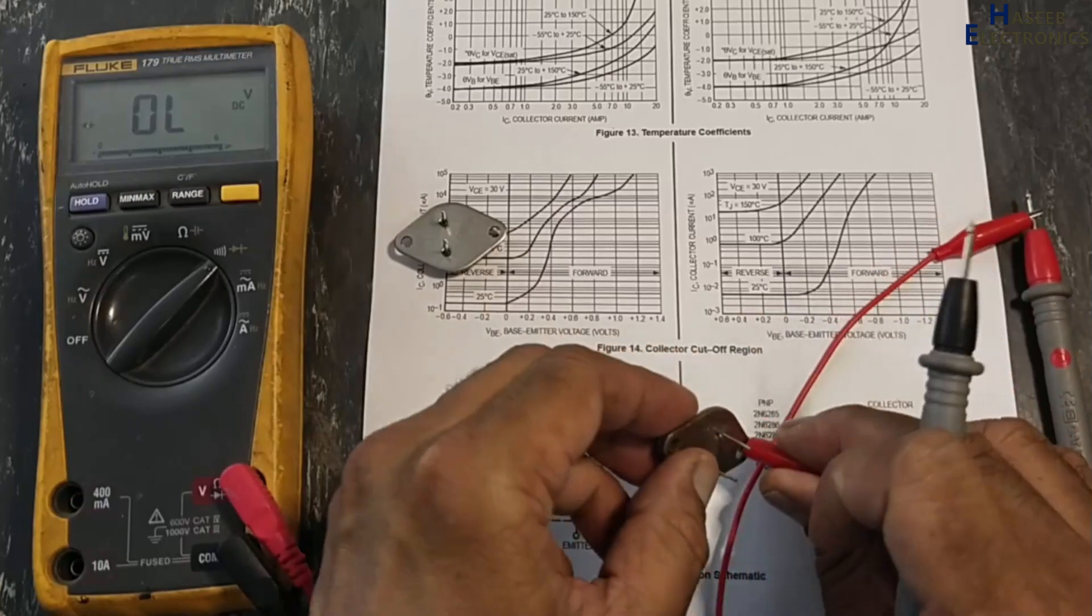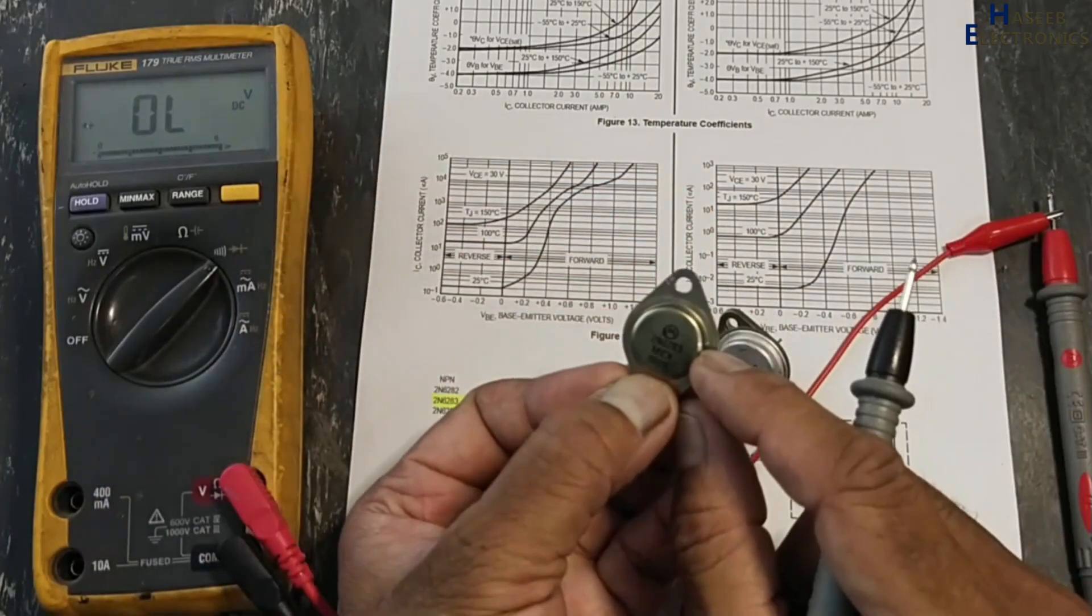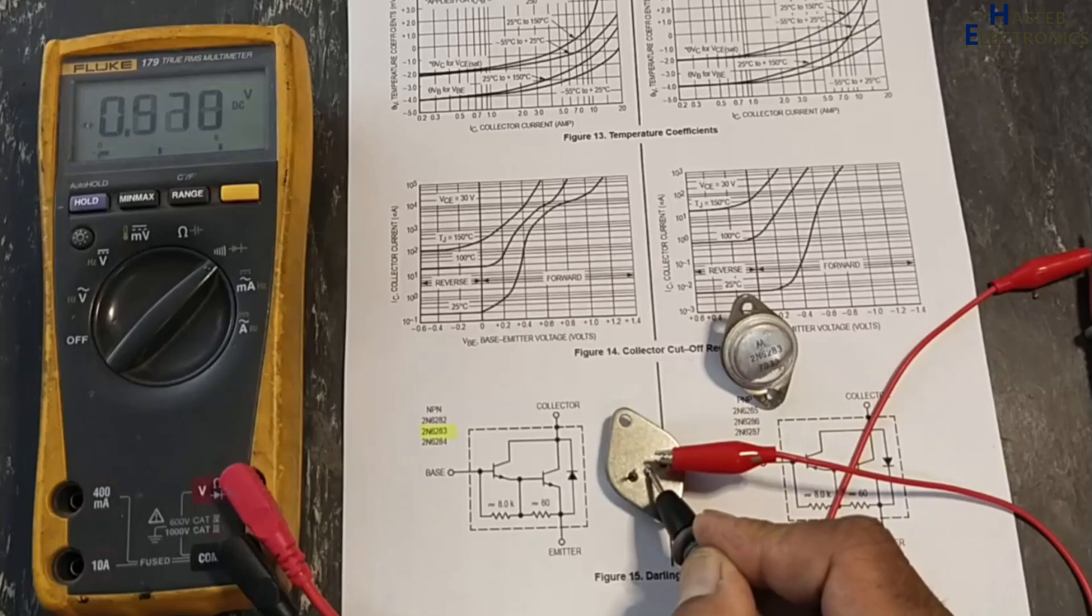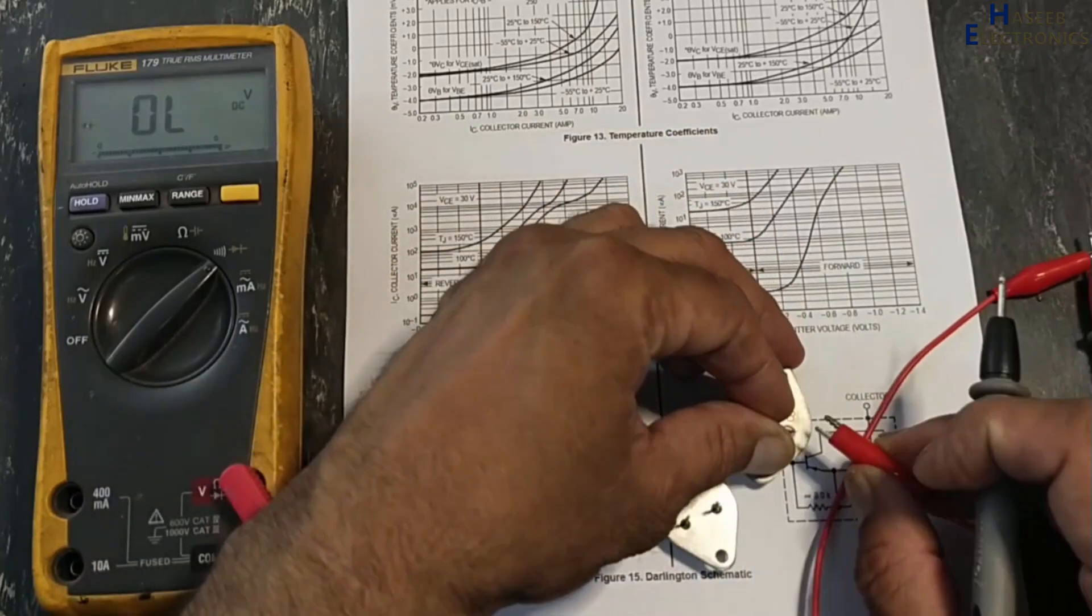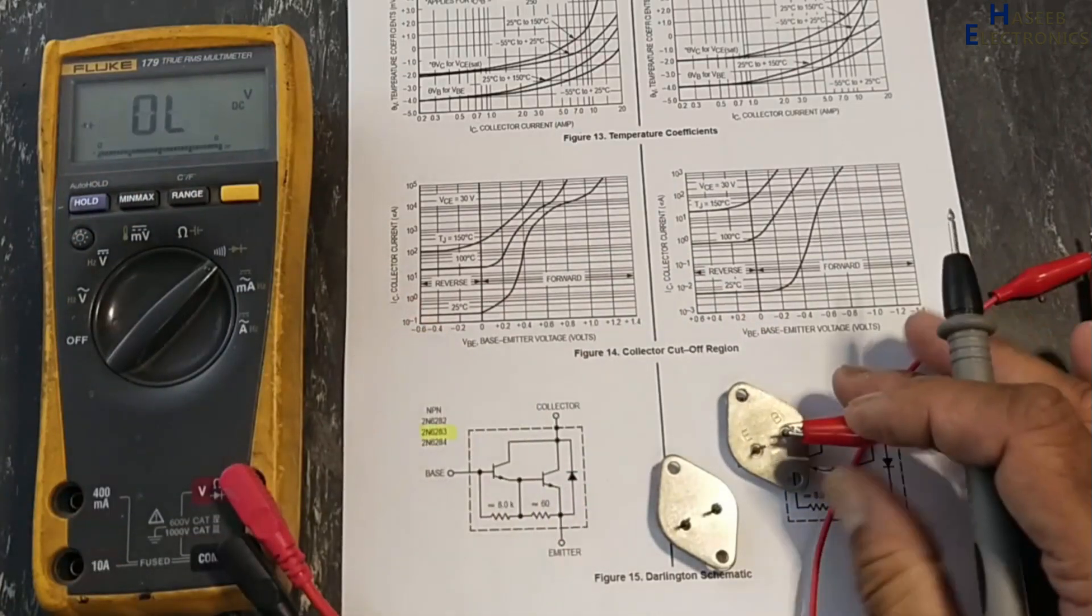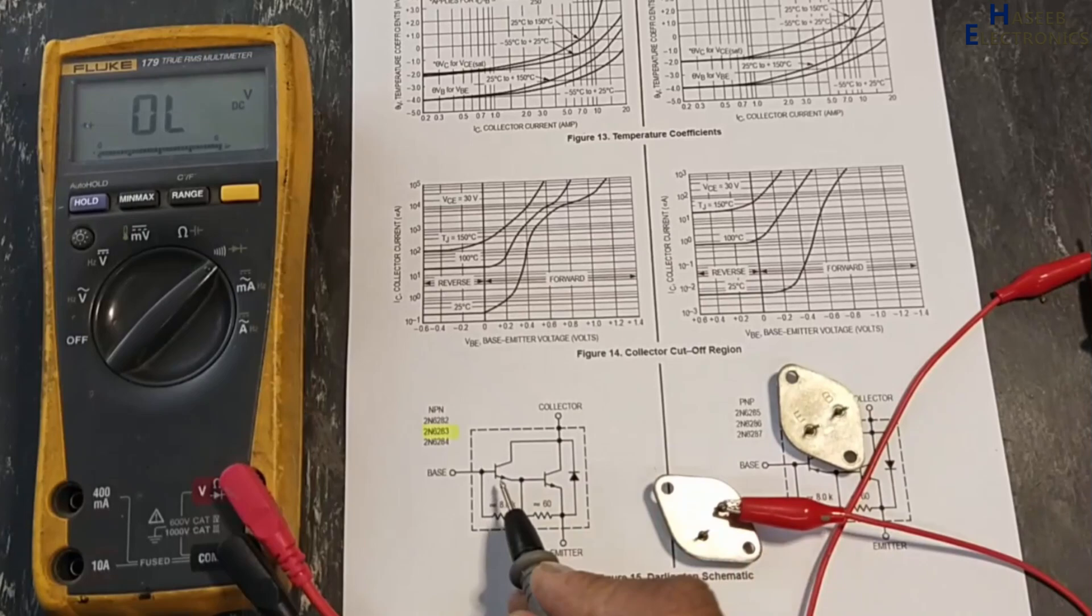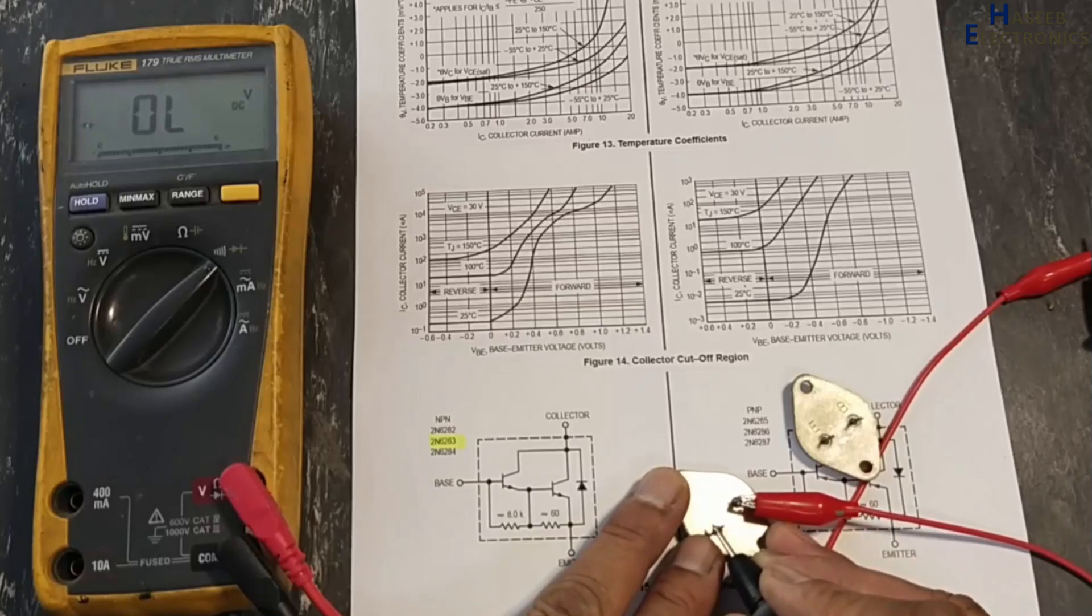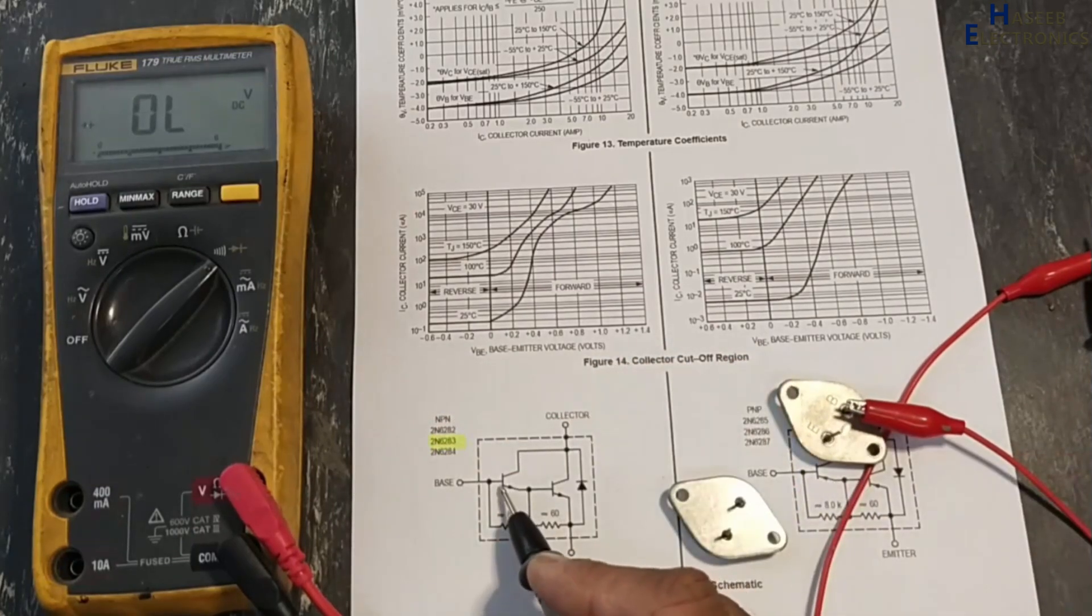The same number 2N6283, it is also from Motorola. Now we will test this one. I removed it from a unit. Red lead at base, black lead at collector, 0.568. If we compare with this one, 0.580, that means it is approximately acceptable. This junction is good. Now we will check with emitter. Base to emitter, it is open circuit, while this transistor is giving 0.619 forward voltage of this junction and this resistor.